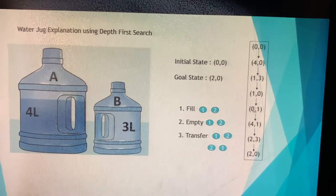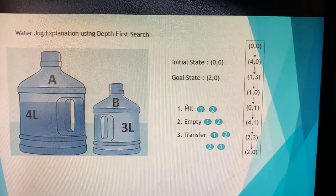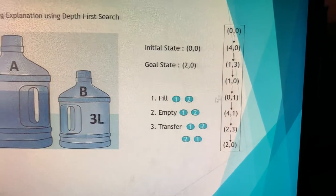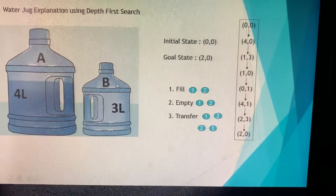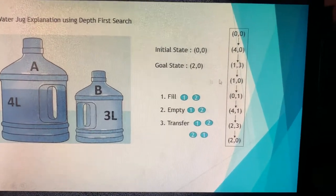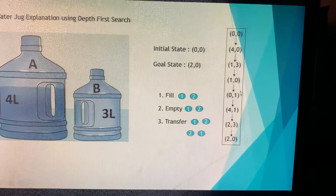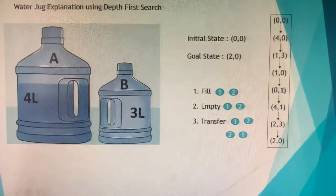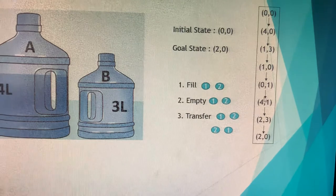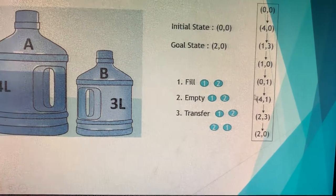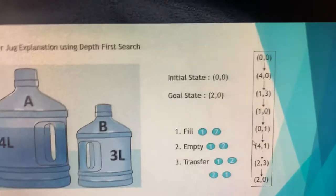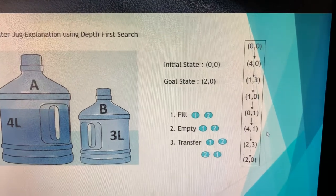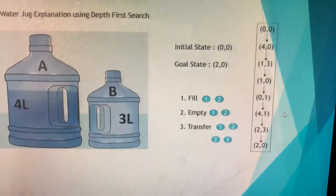From state (1, 0), we transfer the one liter from jug A into jug B. Jug A becomes empty and jug B contains one liter, giving state (0, 1). Next, we fill up jug A with four liters of water, so jug A contains four liters and jug B contains one liter, giving state (4, 1).